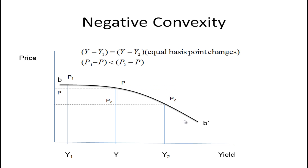I've drawn that separately, and this is the case where we have what we call negative convexity. This is the case again where we have the same equal basis point change for a fall in interest rates and a rise in interest rates. You'll notice that in this case, the rise in interest rates causes the bond price to fall much more than the bond price rises when interest rates fall.